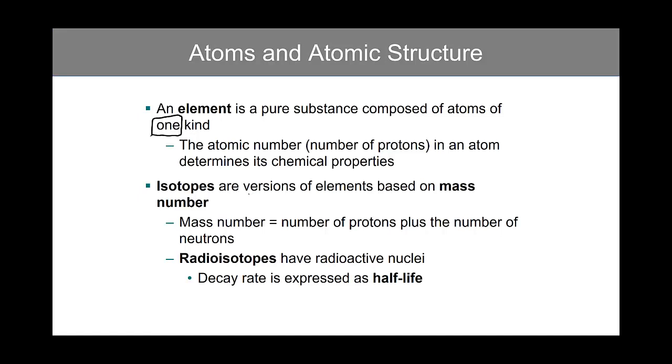And again, isotopes are versions of elements based on mass number. We talked about carbon-6 in which you have six protons and six neutrons.